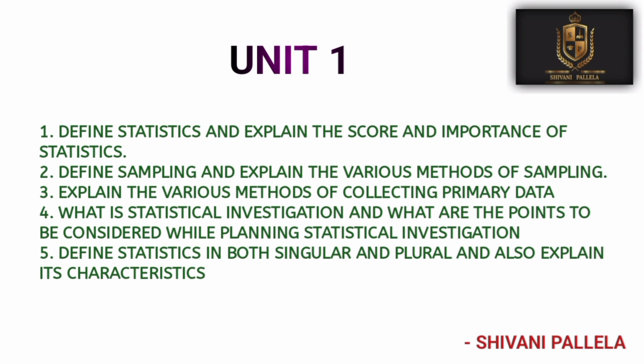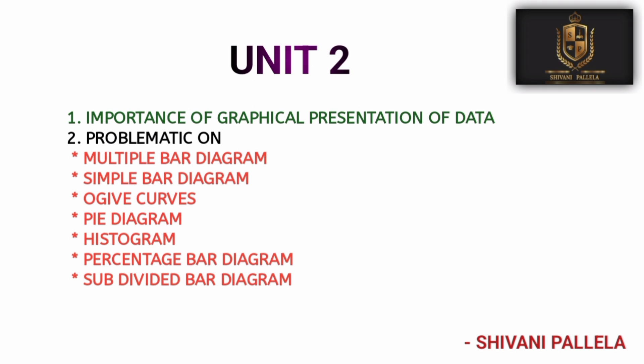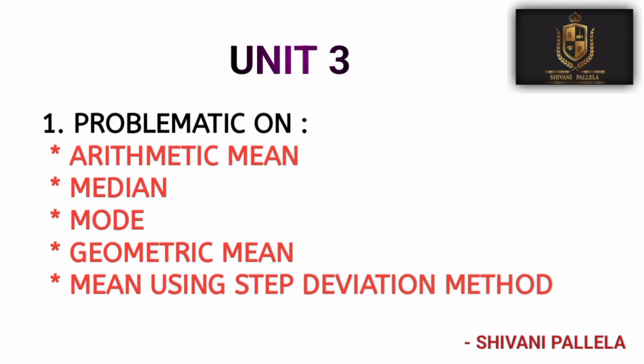Unit Two is also an easy chapter. The one theory question likely to come is: importance of graphical presentation of data. Mostly, problematic questions will come from Unit Two. If a problematic question is asked, it will involve multiple bar diagram, pie diagram, histogram, or subdivided bar diagram. If you are perfect with these methods, you can attempt one long and one short question from Unit Two — this unit also consists of 16 marks.